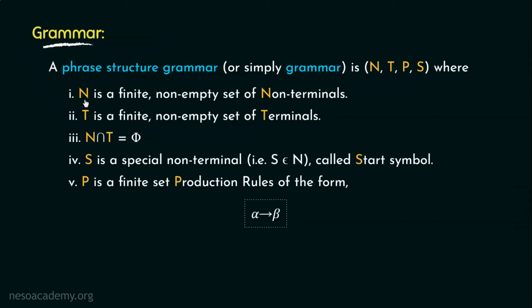Where N is a finite non-empty set of non-terminals or variables, T is a finite non-empty set of terminals or constants. Now, since N and T are two disjoint sets, hence N intersection T is phi.